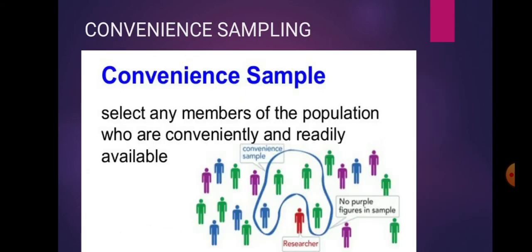Next is convenience sampling. What is convenience sampling? Convenience sampling is selecting any member of the population who are conveniently and readily available. If you want to collect data from samples which are already available, then you use convenience sampling.